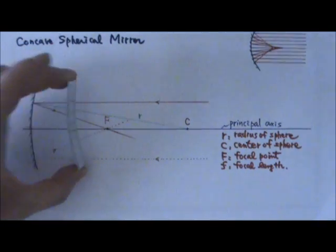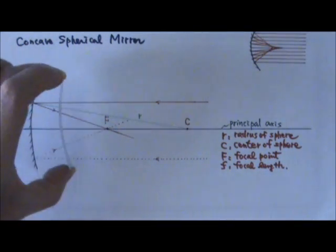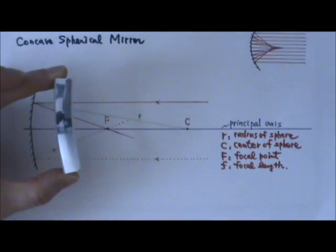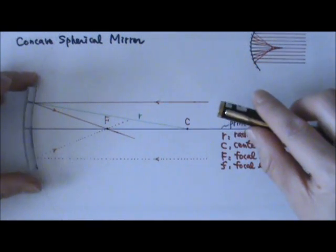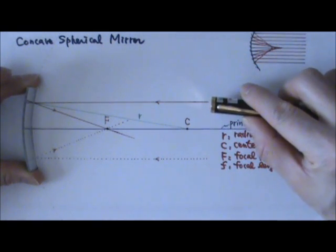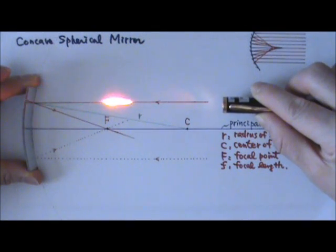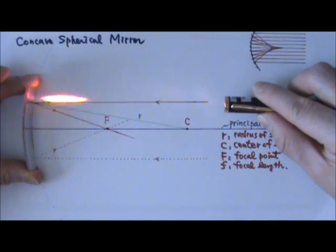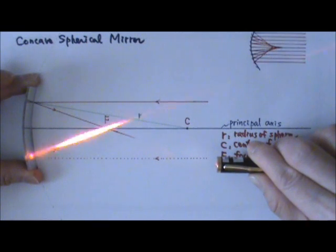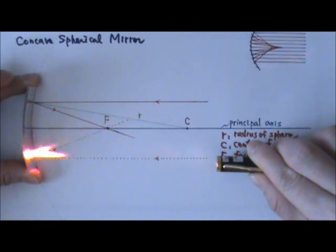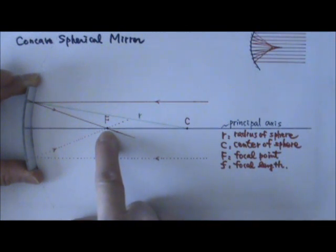Here I have a curved mirror for demonstration. It is not really a spherical mirror because it is only curved in one dimension. I'm going to shine a laser beam at it. As you can see, the mirror bends the light towards the center. If I shine another ray that is also parallel to the principal axis, it also gets bent towards the center, and they both go through this focal point, F.